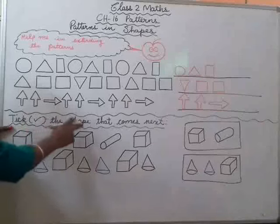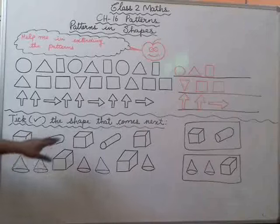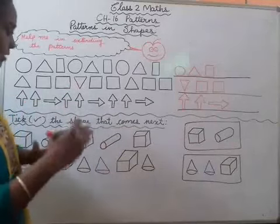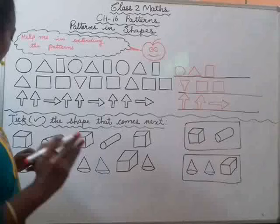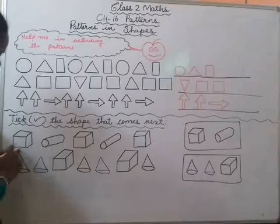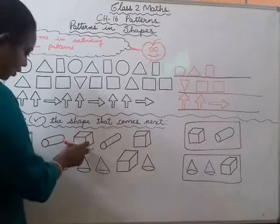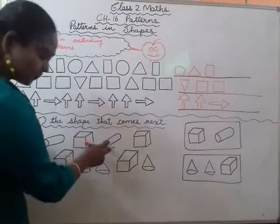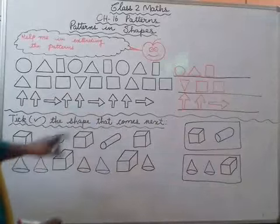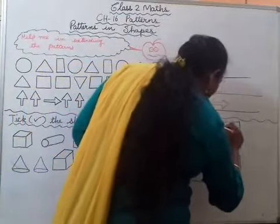Take the shape that comes next. Is me kya kareenge? Joh shape diya hai, uske baad, yeh pattern mein joh diya hai, uske baad next joh shape hai, woh aap ko tick karna hai. This is a cube, then it's a cylinder type shape. Then again cube, then cylinder. Then cube — so uske baad what will be the next shape? Next shape will be cylinder. You have to pick on that.